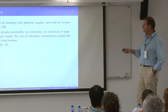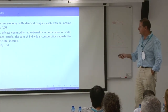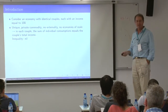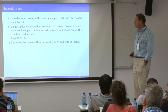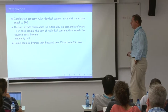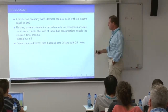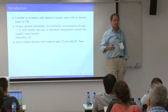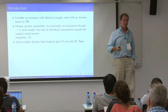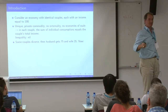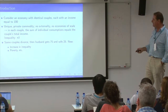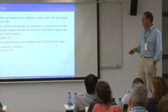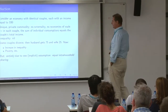Now, what's the inequality in this economy? You would say zero — I have a bunch of identical couples, zero inequality. Let's introduce divorce. Say some divorce, and whenever they divorce the husband gets 75 and the wife gets 25. Now we're in a new situation with couples and singles. Now we have inequality. Now we have poverty — those women are poor in the technical sense.